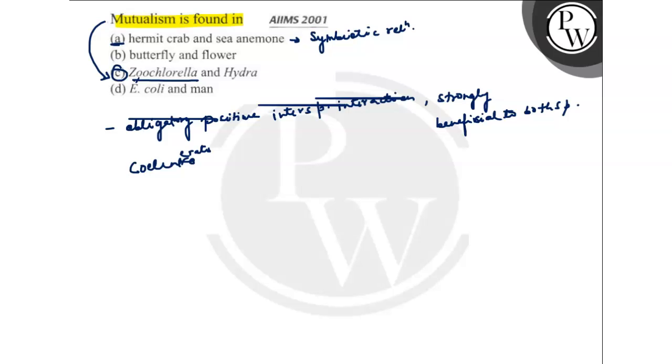Option B says butterfly and flower. The interaction between butterfly and plant is also mutualism.